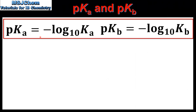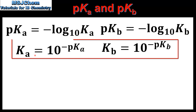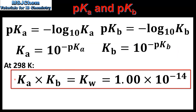Next we look at the pKa and the pKb. To find the pKa we take the negative log of the Ka, and to find the pKb we take the negative log of the Kb. The Ka is equal to 10 raised to the power of negative pKa, and the Kb is equal to 10 raised to the power of negative pKb. Earlier in the video we looked at the relationship between Ka and Kb for a conjugate acid-base pair, which has a value of 1.00×10⁻¹⁴ at 298K.